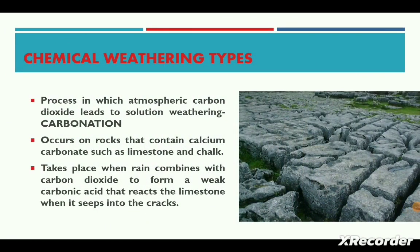Rainwater, in the course of its passage through the atmosphere, dissolves some of the carbon dioxide present in the air. This turns the water into a weak acid — carbonic acid — which acts on limestone rocks. This process is termed carbonation. Carbonation is the reaction of carbonate or bicarbonate ions with minerals in the rock.